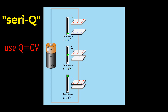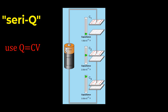I could have any number — even 1,000 capacitors in series — and they would all have the same charge, even though they have different capacitor values and different voltage drops. Notice that if I change the voltage values across each capacitor by changing the battery voltage, the amount of charge on each capacitor changes, but they all remain equal to each other. This is SERI-Q.